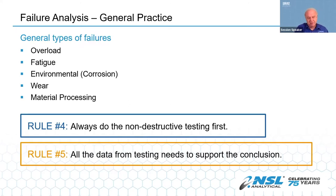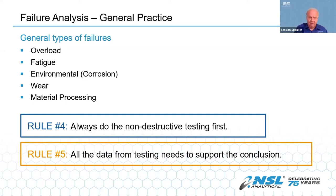Most of the failures an analyst will see are broken up into five general types: overload, fatigue, environmental cause (generally corrosion), material processing, or wear. There are a lot of variations and combinations on all of these things. The analyst needs to get to the bottom line — why did it happen, and how do I keep it from happening again?